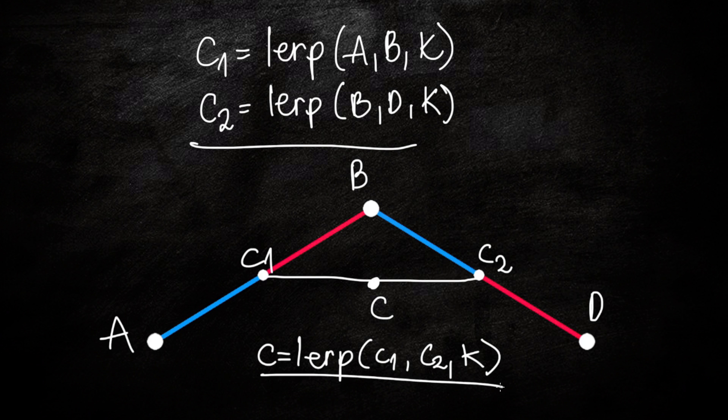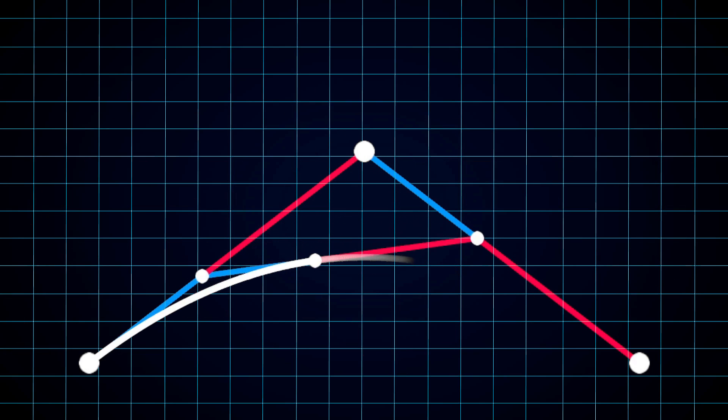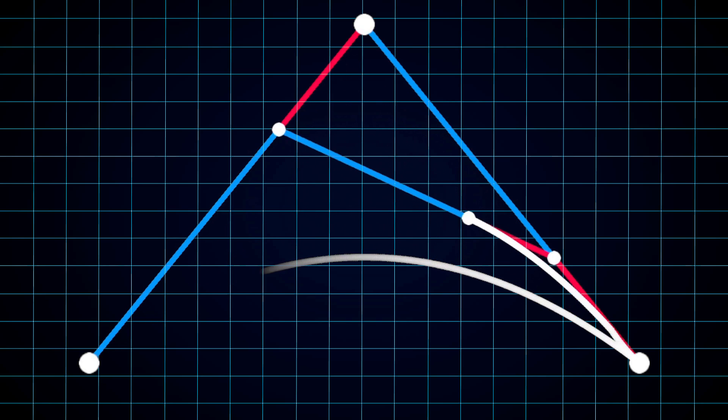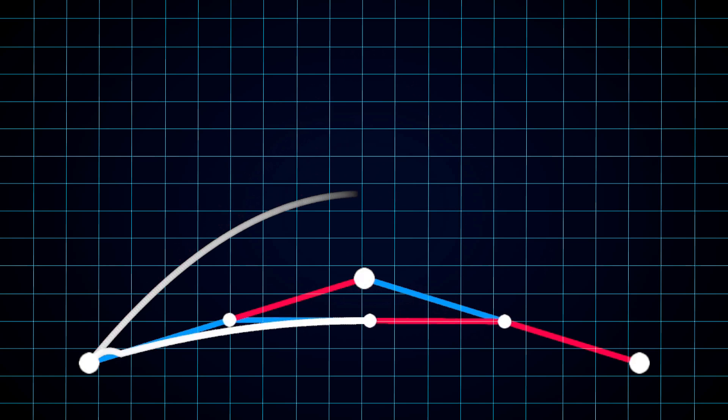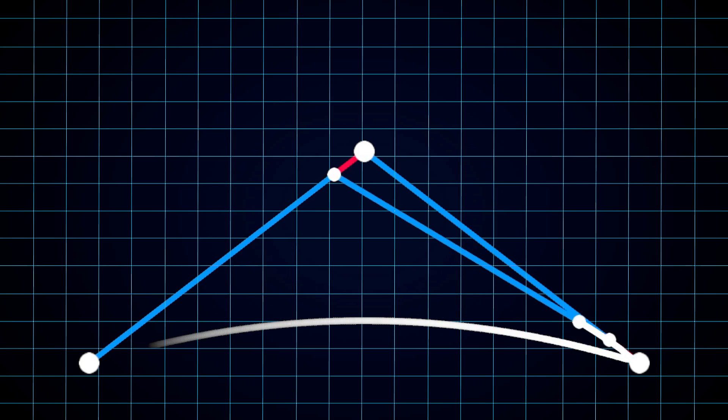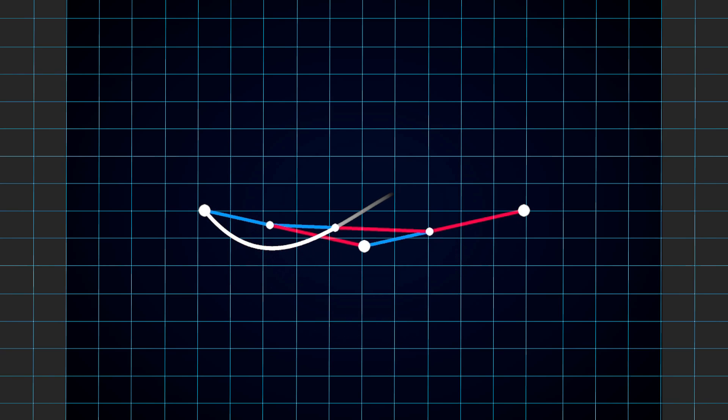If we track the position of point C as the value of k changes, you can see that it draws a curve between the first and the last point. And to change the shape of the curve, all we need to do is move the middle point around. In this example I'm moving the middle point up and down, which affects the intensity of the curve. We can even animate the position of the middle point to change the shape of the curve as the value of k goes from 0 to 1.